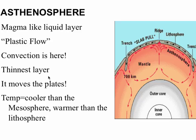Now we get to the interesting layer, the asthenosphere. It's a magma-like liquid layer — we're going to learn a lot more about it. It has plastic flow, which is kind of in between a solid and a liquid. Convection occurs here, and this convection is really important. It's the thinnest layer and it's the layer that moves the plates. The temperature is cooler than the mesosphere and warmer than the lithosphere. Energy or heat gets concentrated in parts of the mesosphere, and where it's hotter, the asthenosphere rises; where the mesosphere is cooler, the asthenosphere sinks, creating big convection circles.